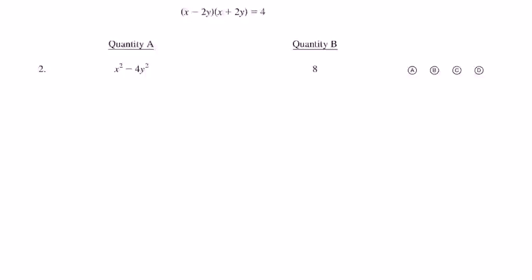Just as a quick refresher, if you're watching this and have no idea what a GRE quantitative comparison problem is, we are given that (x - 2y)(x + 2y) = 4, and we've got to decide which one is bigger between x² - 4y² and 8.